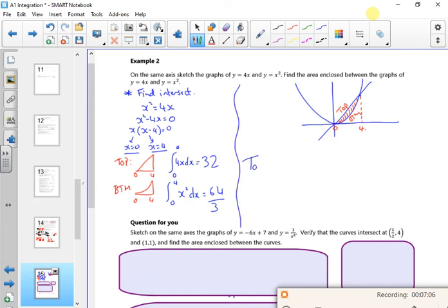So my total area is top minus bottom. So top is 32, bottom is 64 over 3. What's that going to be? 96 over 3 minus 64 over 3. It's going to be 32 over 3.